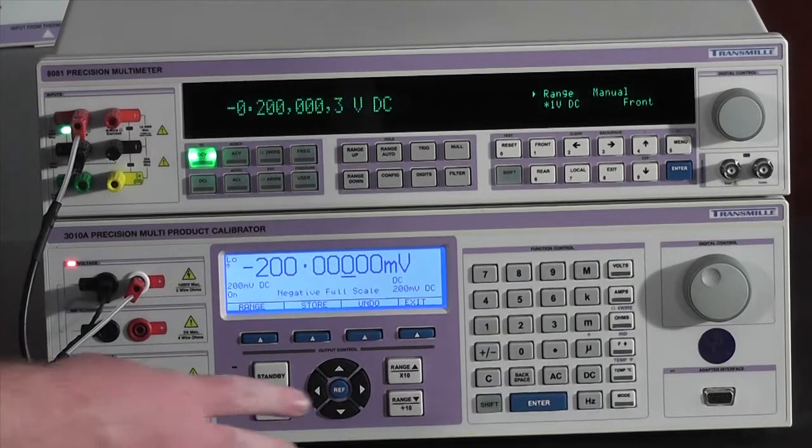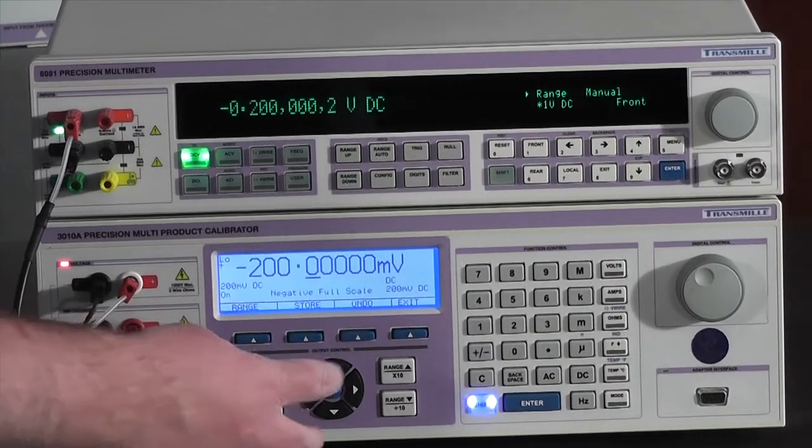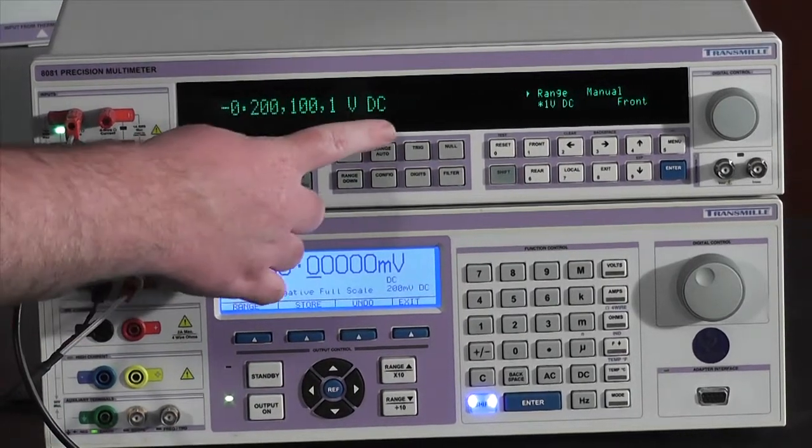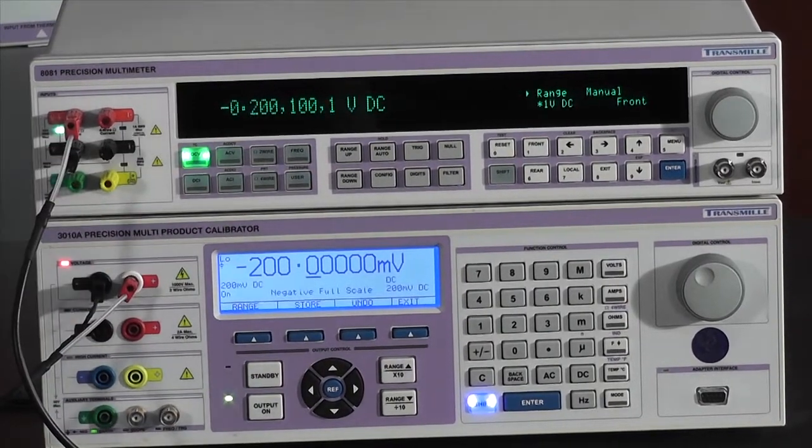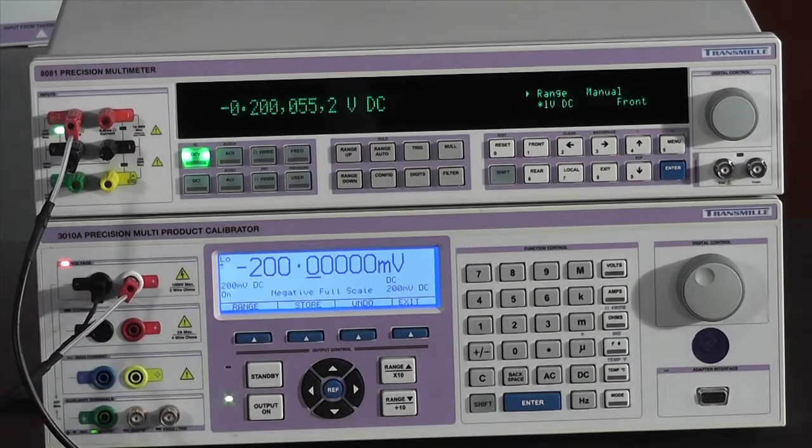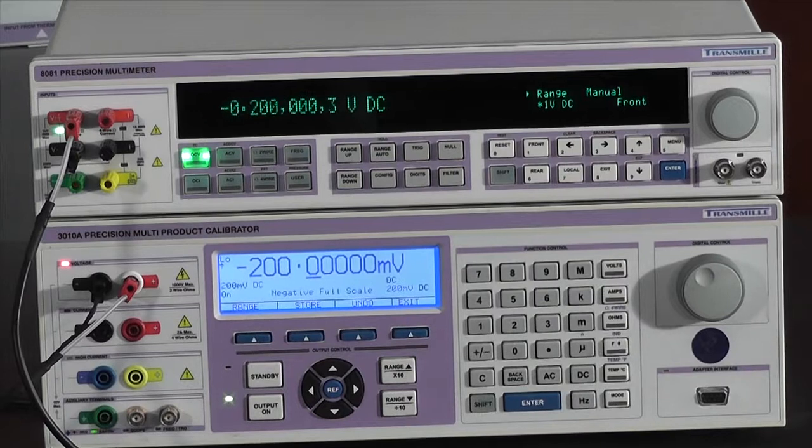If in the event that you make an adjustment that you do not want to keep, for example, I have adjusted this far too far, you can simply press undo and it will put the calibrator back to the previous output.